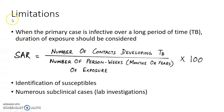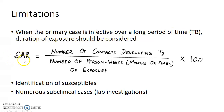Now let us see about the limitations of secondary attack rate. When the primary case is infective over a long period of time — for example, in diseases like tuberculosis — duration of exposure should be considered, so the formula requires a slight modification. In this case, SAR equals number of contacts developing tuberculosis divided by number of person-weeks, either in months or years of exposure, into 100.